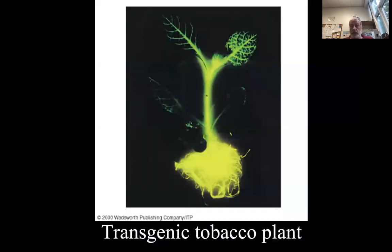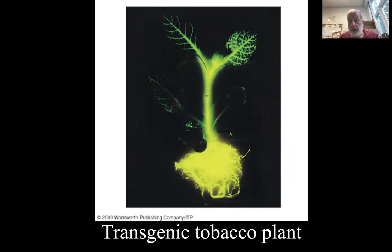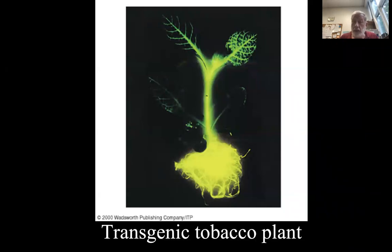Here's a transgenic tobacco plant. It has had the gene for bioluminescence from a firefly — which is really a beetle, not a fly — put into it and engineered in such a way that when the plant gets low on water, it will start to glow.